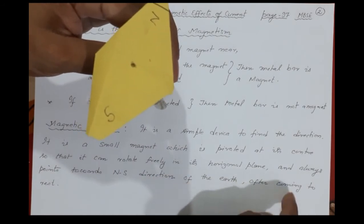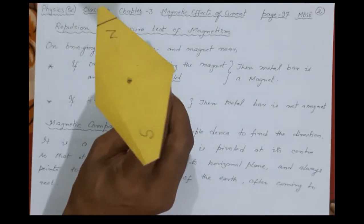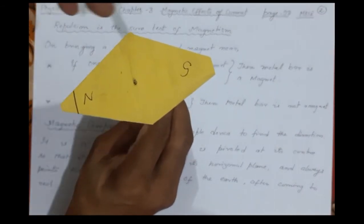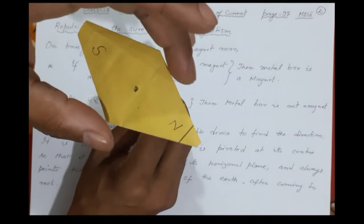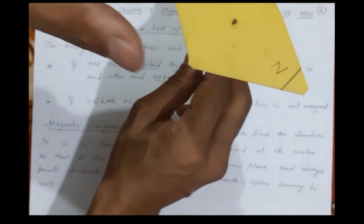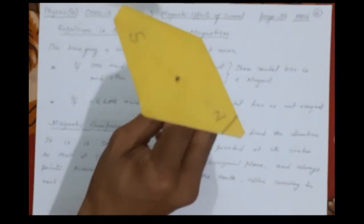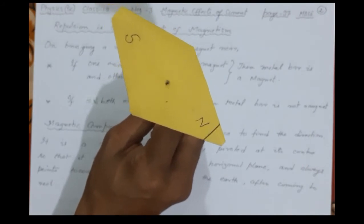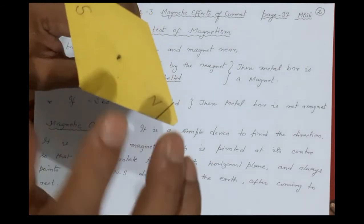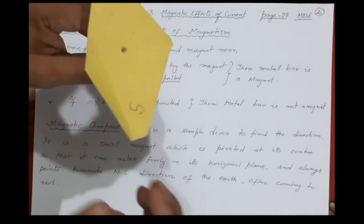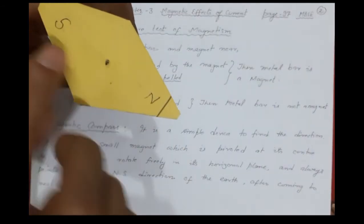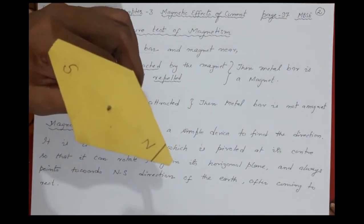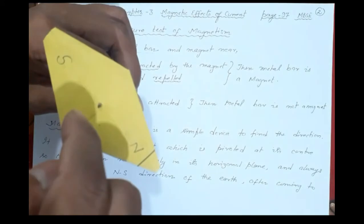After coming to rest, the compass always aligns in the north-south direction. If you take it to some place where you don't know left, right, north, or south, you take out your compass and make it free to move. It will always show north-south. Then you are sure which side is north, which is south, which is east, and which is west.